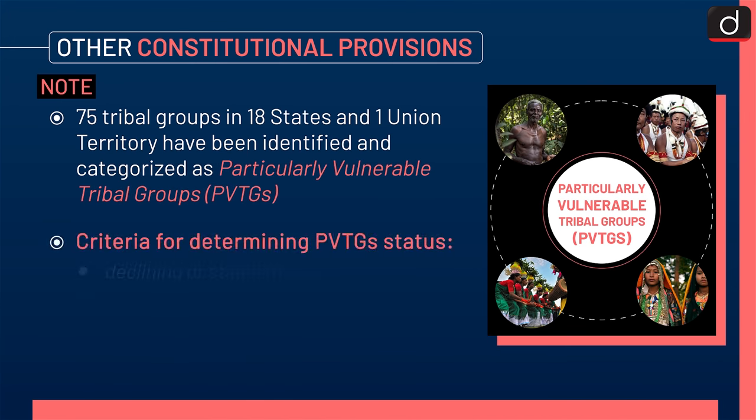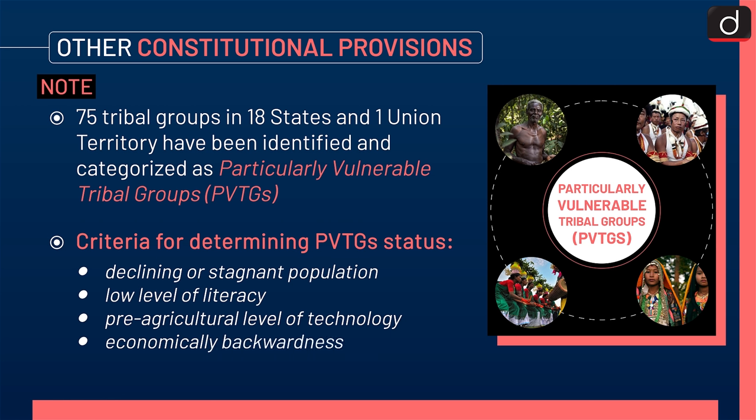75 tribal groups in 18 states and one union territory have been identified and categorized as Particularly Vulnerable Tribal Groups, i.e., PVTGs. The criteria for determining PVTG status are: declining or stagnant population, low level of literacy, pre-agricultural level of technology, and economic backwardness.